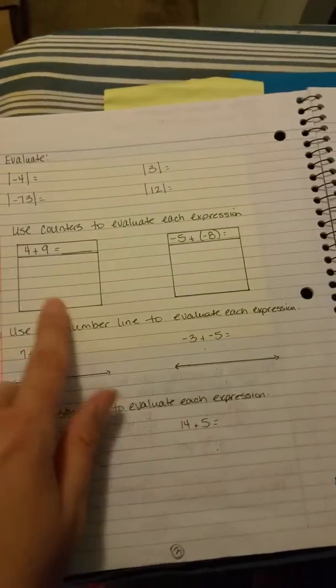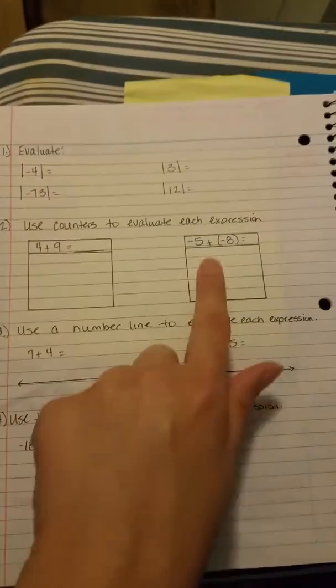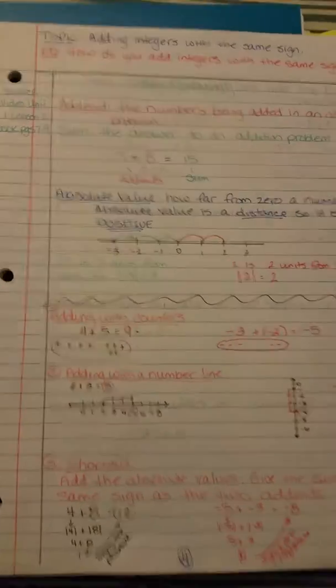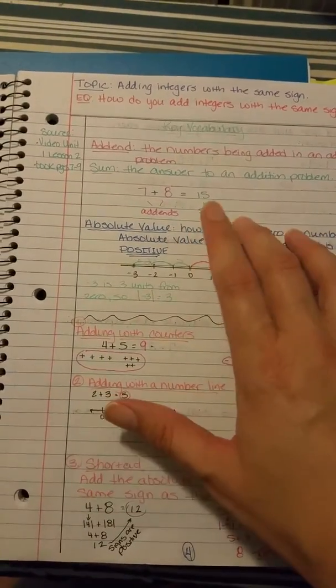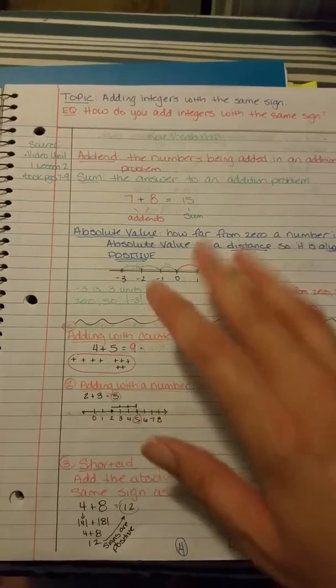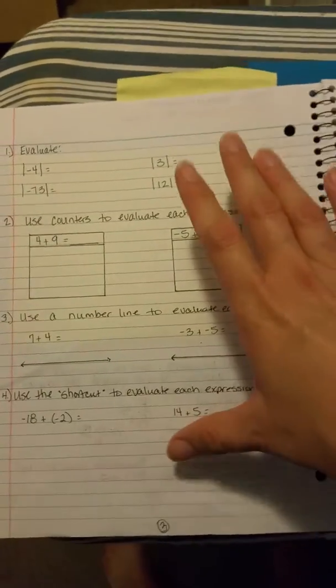Over here, using counters, positive integers, negative integers. The whole point of this is for you to have the examples on this side and the definitions and all the notes so that you can then work with me on this side.